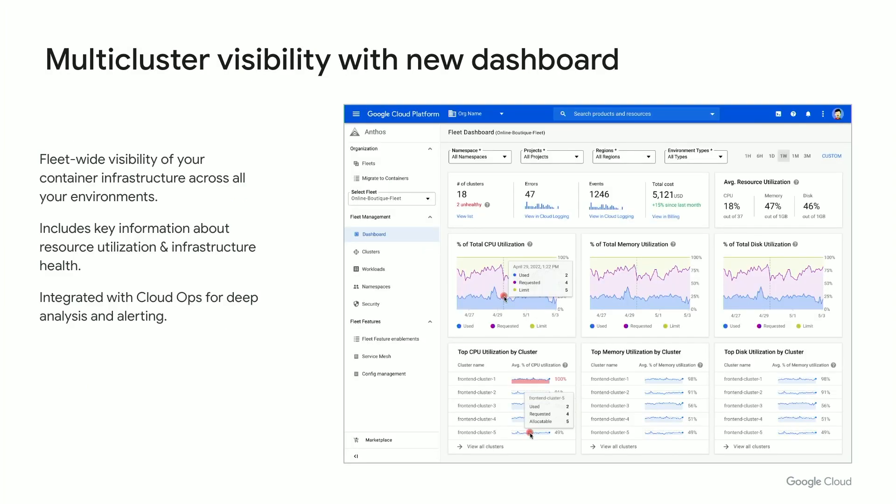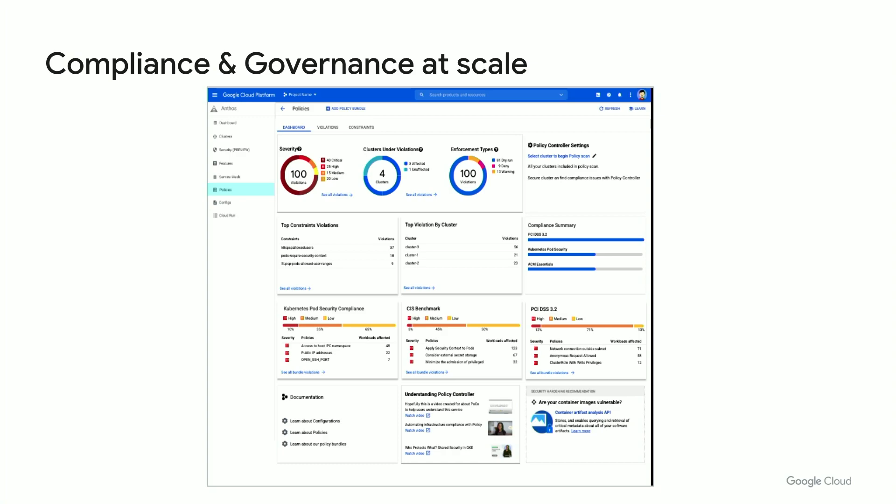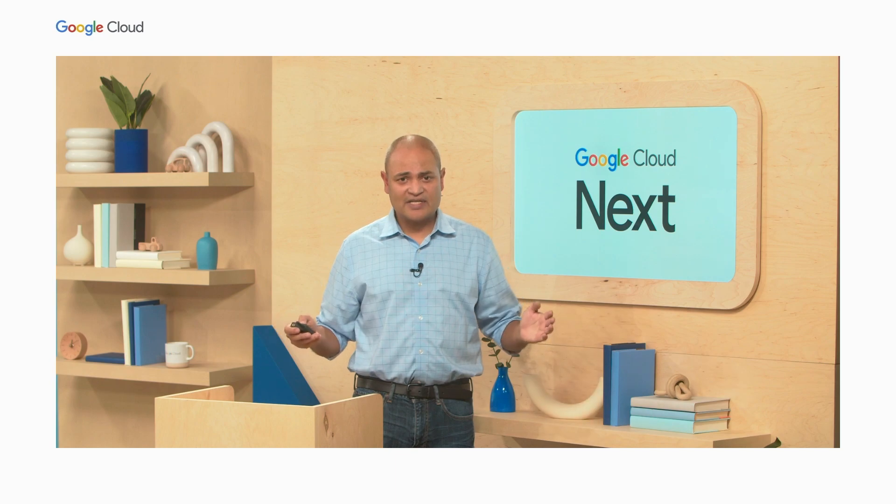This is our brand new dashboard for fleet and multi-cluster capabilities. It helps you get fleet-wide visibility for your container infrastructure across all your environments, including key information about resource utilization, infrastructure, and policy violations. It also integrates with Cloud Ops for deep analysis and alerting. For compliance and governance, once you define your policies — either standards-based or organizational — the dashboard allows you to get quick visibility into which policy violations exist, whether they're in audit mode or enforcement mode, and helps you understand what you need to do to remediate and get back into compliance. This has been our number one ask from customers.